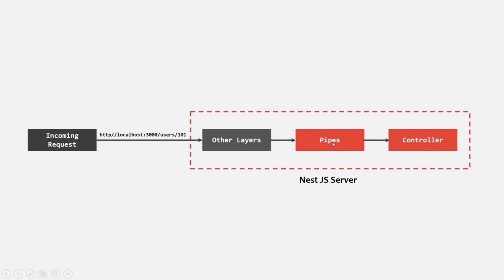The pipe is used to validate or transform the request data. When we read the ID from the route parameter in our NestJS application, it will be read as a string because route parameters are strings. But the ID of the user should be a numeric value. So we can use this pipe to convert the string value to a numeric value before it reaches the controller. This is data transformation — converting a string value to a numeric value.